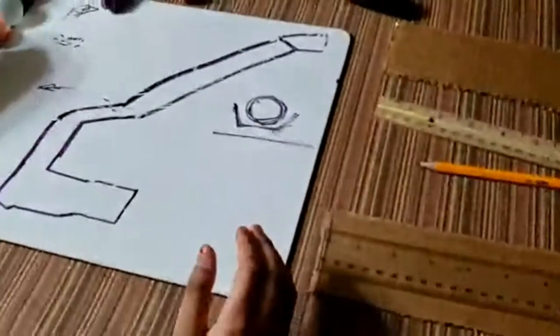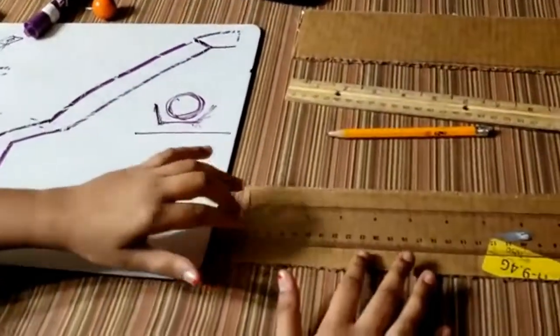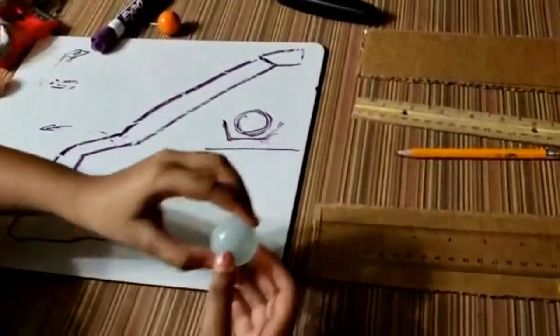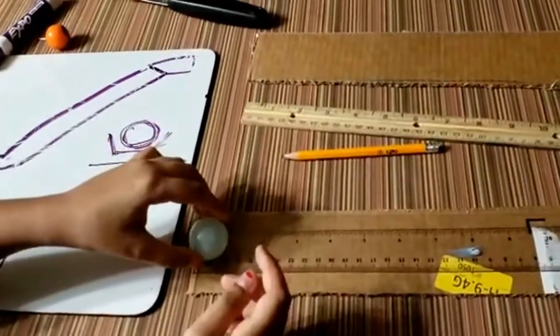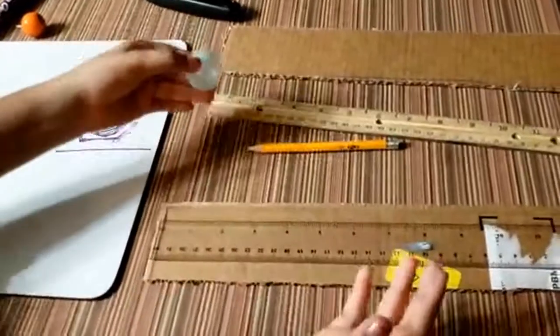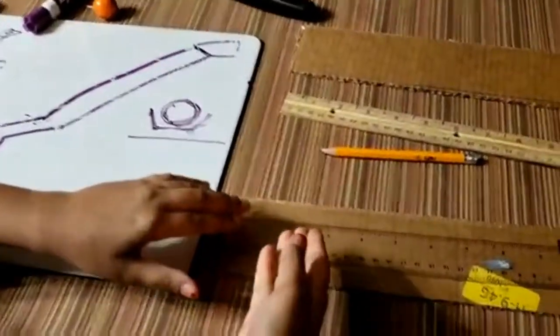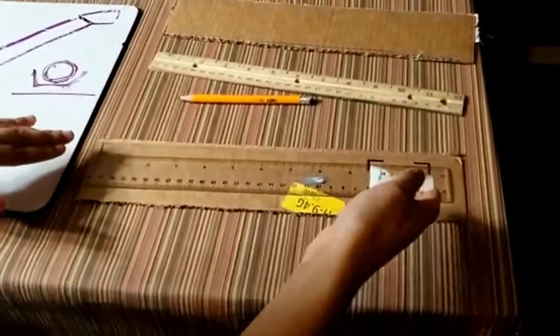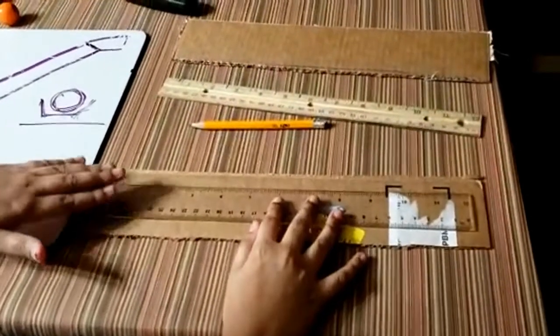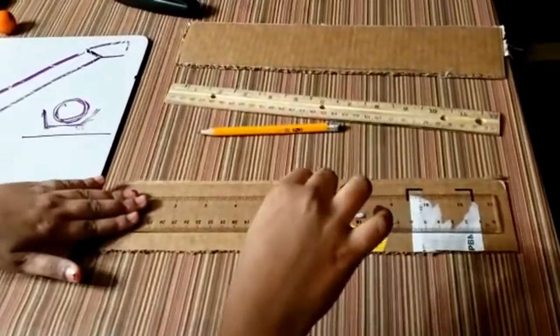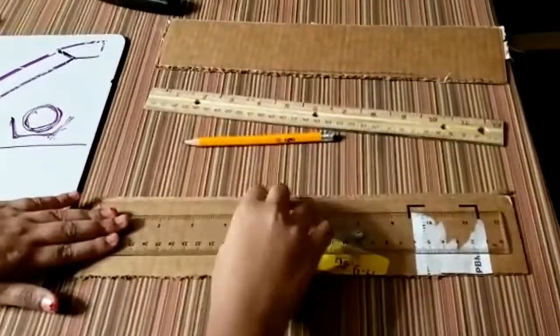Now we are going to make our ramp. Your ramp has to be wider than your ball so that the ball can move freely. I took a wider ruler and I'm placing it in the middle so there will be an equal amount on both sides.